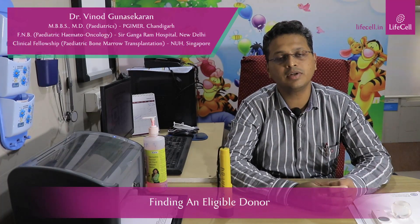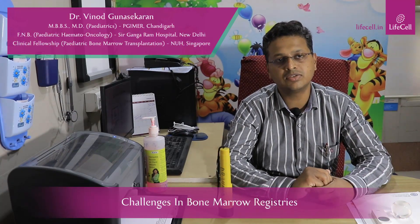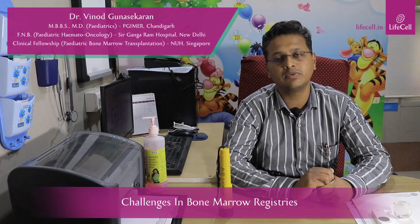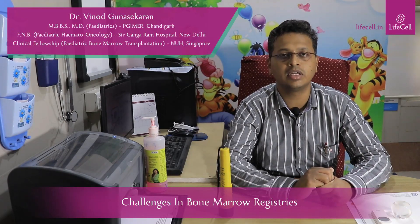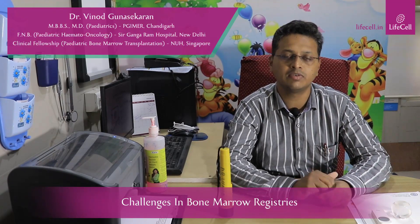How do we identify a donor for a given patient? We do what we call HLA matching within the family first. If there is an HLA matched family member, then he can donate stem cells for the affected patient. But in the worst case, if there is no HLA match within the family, then we have to approach donor registries where we can find unrelated donors who are HLA matched to the given patient.